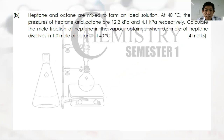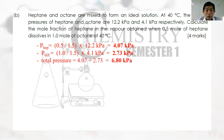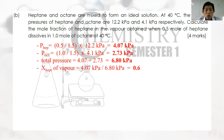Structure Question 3b (part 2): Heptane and octane are mixed with 0.5 mol heptane and 1.0 mol octane at 40°C. Vapor pressures of heptane and octane are 12.2 and 4.1 kPa respectively. Partial pressure of heptane = (0.5 / 1.5) × 12.2 = 4.07 kPa. Partial pressure of octane = (1.0 / 1.5) × 4.1 = 2.73 kPa. Total vapor pressure = 6.80 kPa. Mole fraction of heptane in vapor = 4.07 / 6.80 = 0.68.